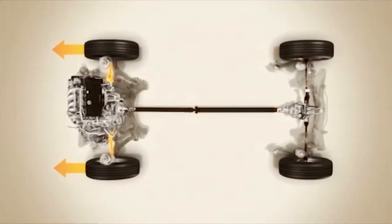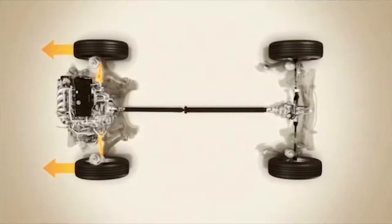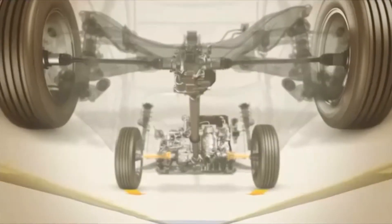And during cruising, the clutch disengages, transferring all torque to the front wheels for enhanced fuel economy.